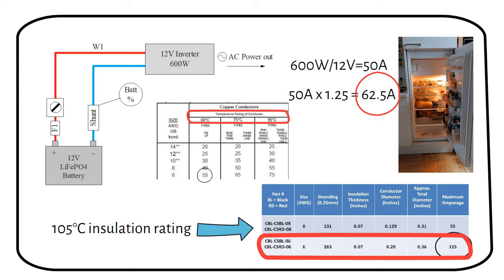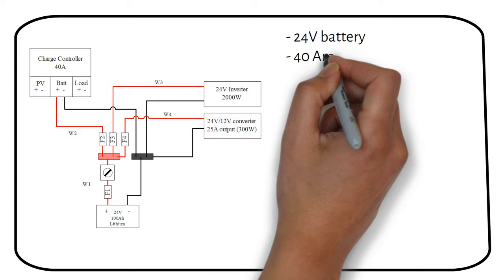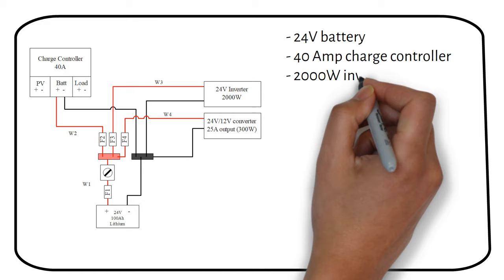Let's do a few other calculations for a client of mine. He has a 24 volt battery, a 40 amp charge controller, a 2000 watt inverter, and a 300 watt DC to DC converter. We will start by sizing the main cable which is called W1, coming from the battery.